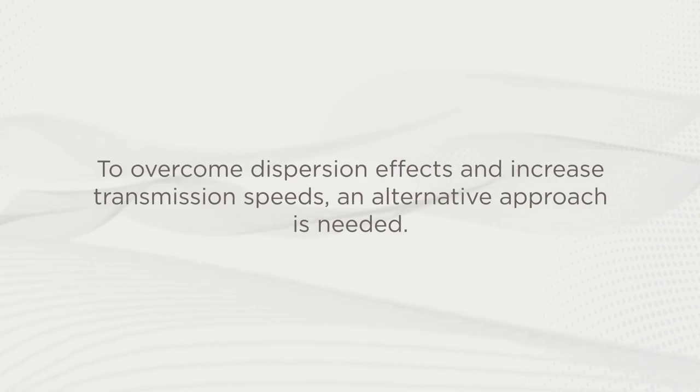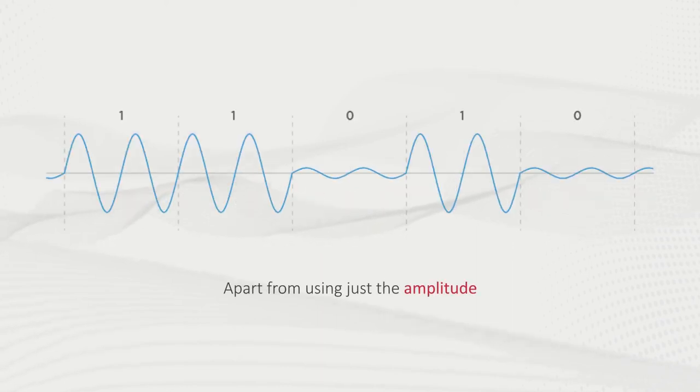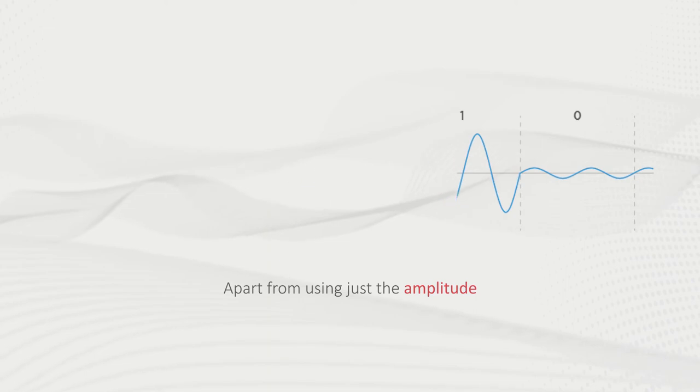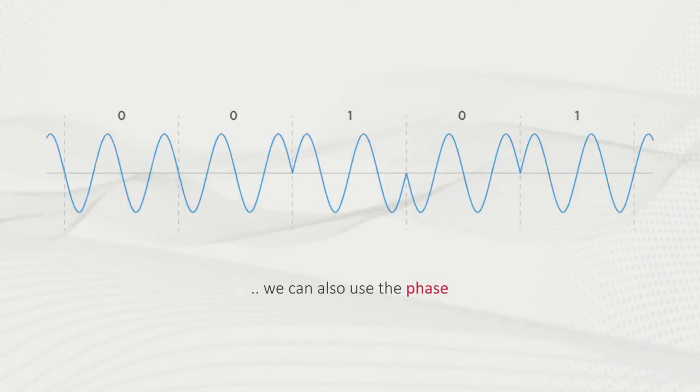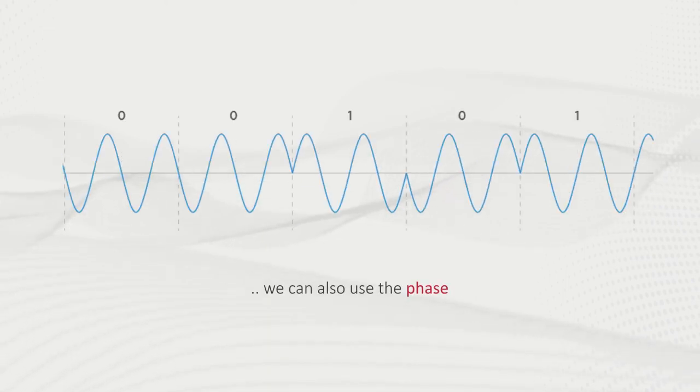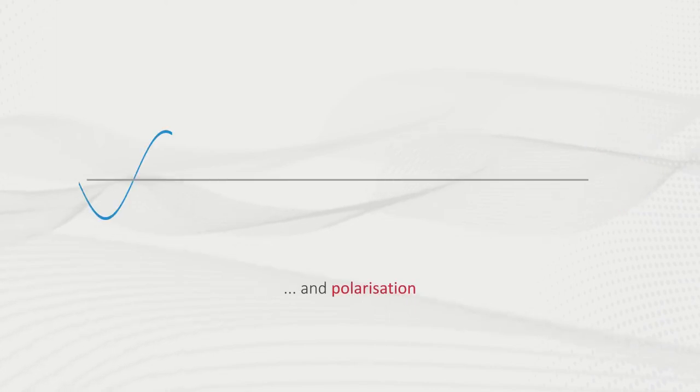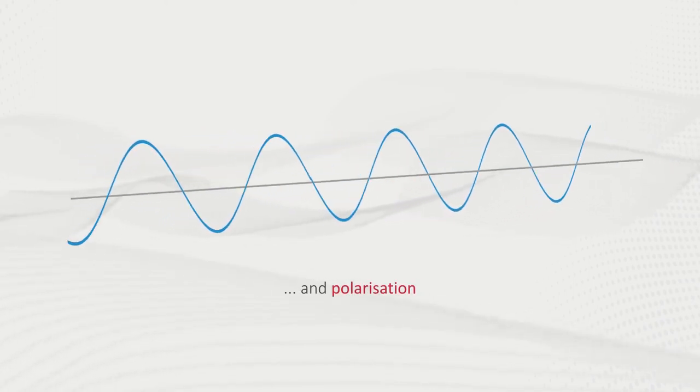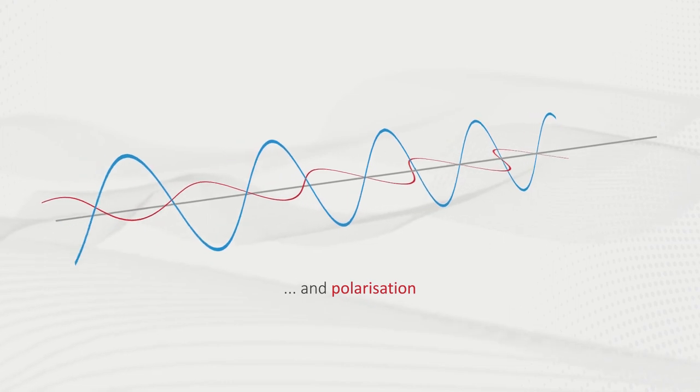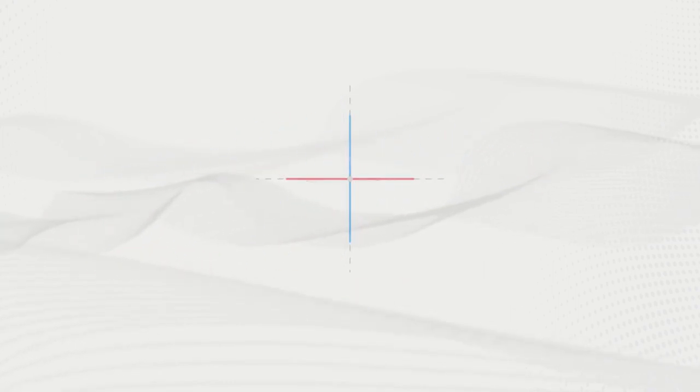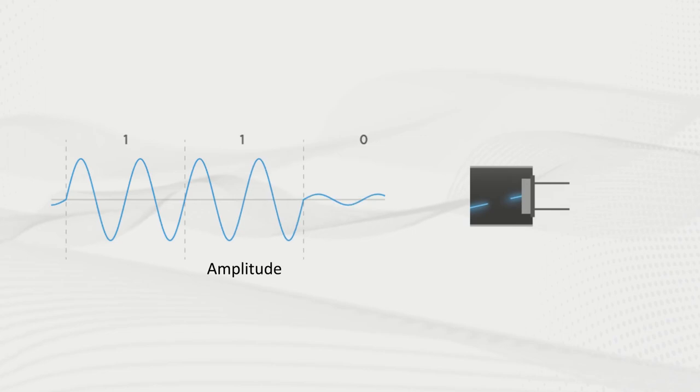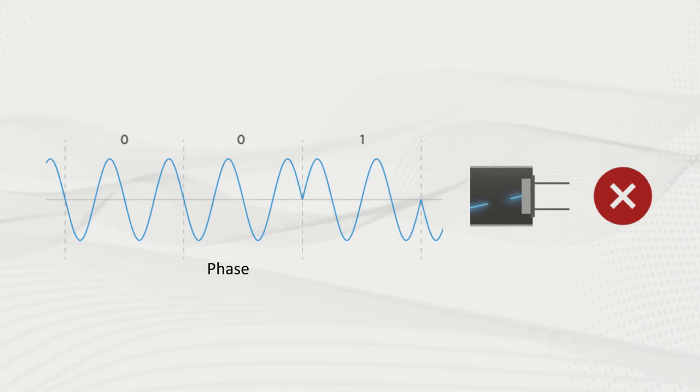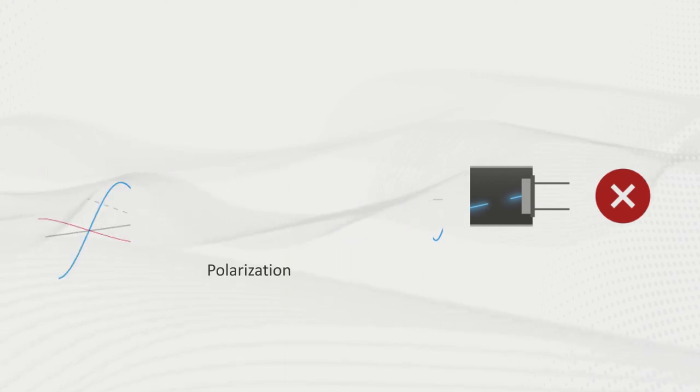To overcome these dispersion effects and increase transmission speeds, an alternative approach is needed. Apart from just using the amplitude or the intensity of the light to encode information, we can also use the phase by changing the delay between pulses, and the polarization, which is the orientation of the signal.